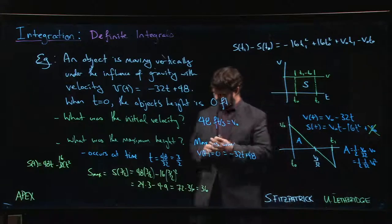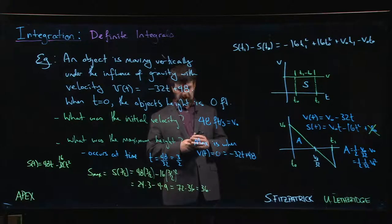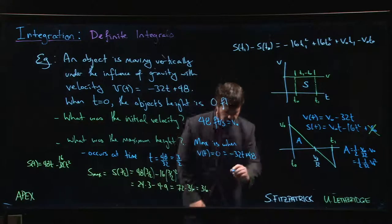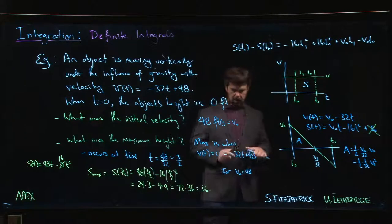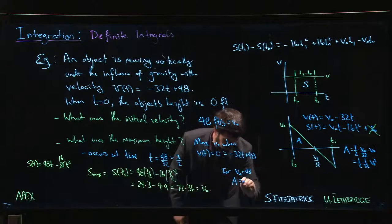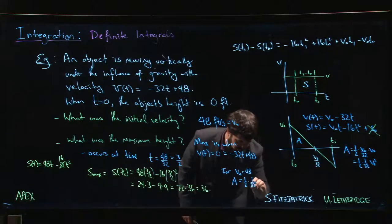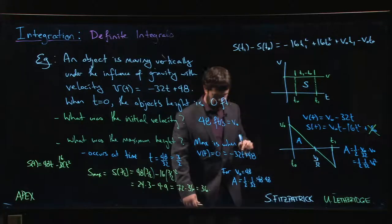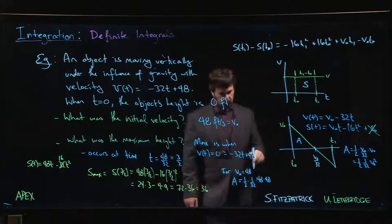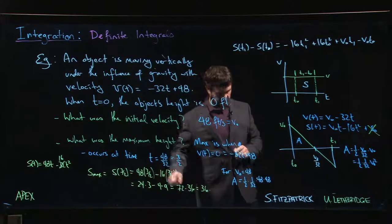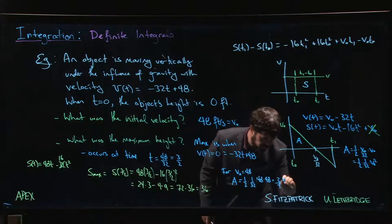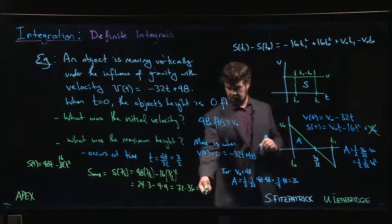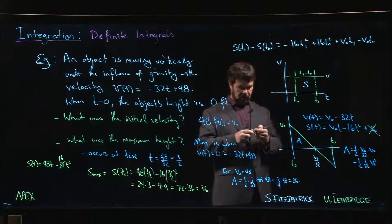For v₀ equals 48, I have an area of one half times 1 over 32 times 48 times 48. 48 over 32 is 3/2, so this is one half times 3/2, which is 3 quarters of 48, which is 36.